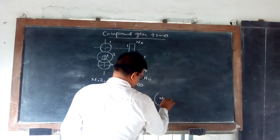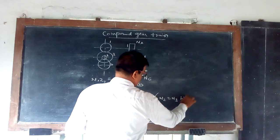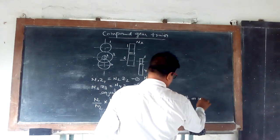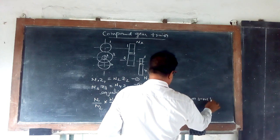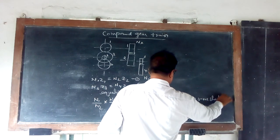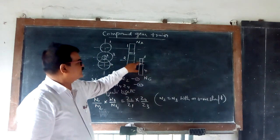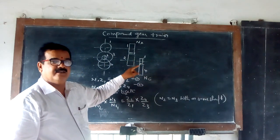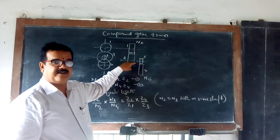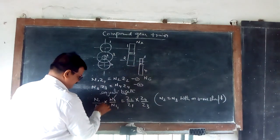Now here what happens is, N2 is equal to N3, because both are on same shaft. N2 is equal to N3, the speed of these two gears are same, why? Because both are mounted on the same shaft. That is why here what happens, this gas cancels.